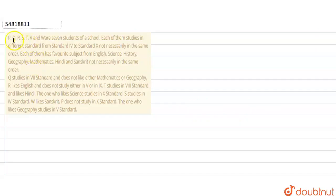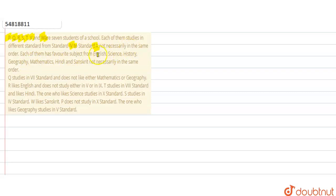Hello everyone. The question is: P, Q, R, S, T, V and W are 7 students of a school. Each of them studies in different standards from Standard 4th to 10th, not necessarily in the same order. Each of them has a favorite subject from English, Science, History, Geography, Mathematics, Hindi and Sanskrit, not necessarily in the same order.